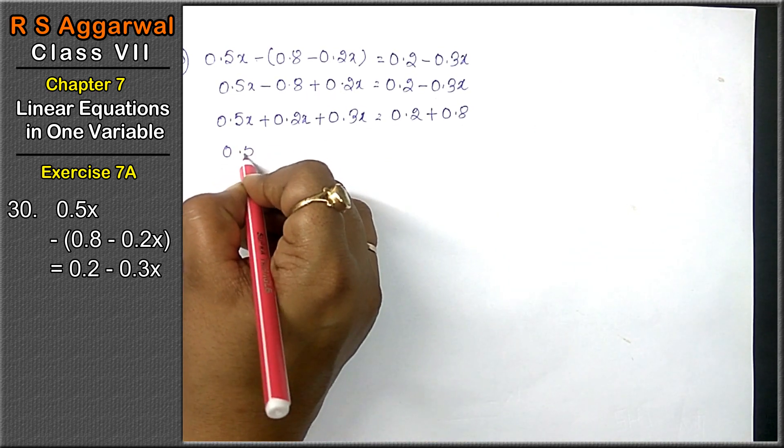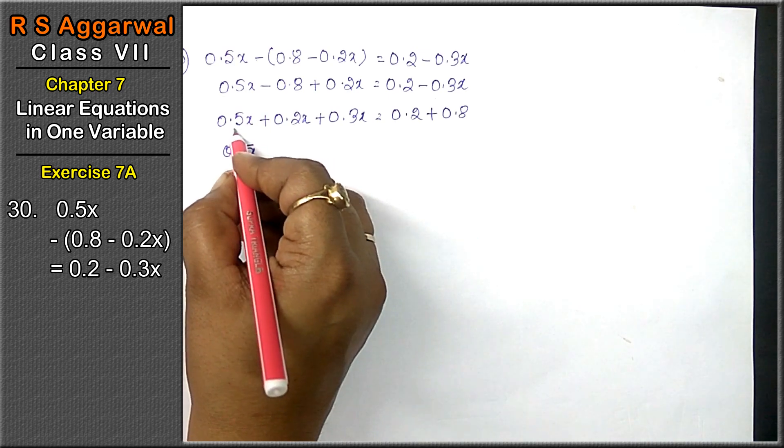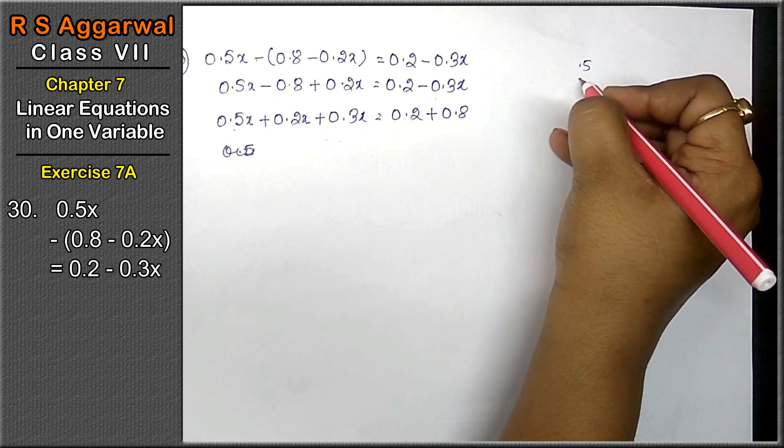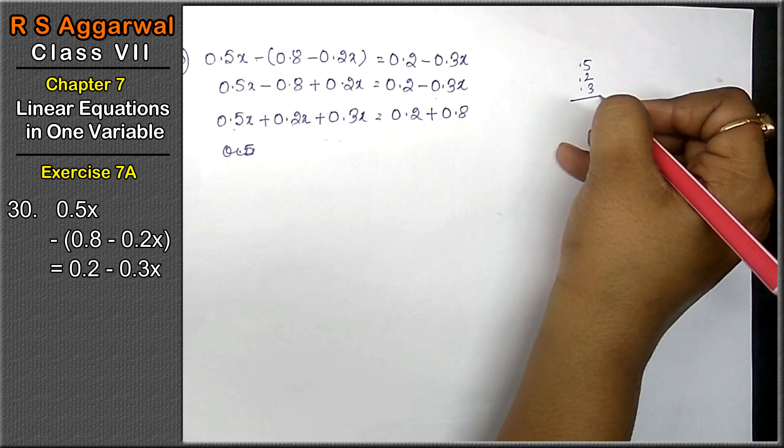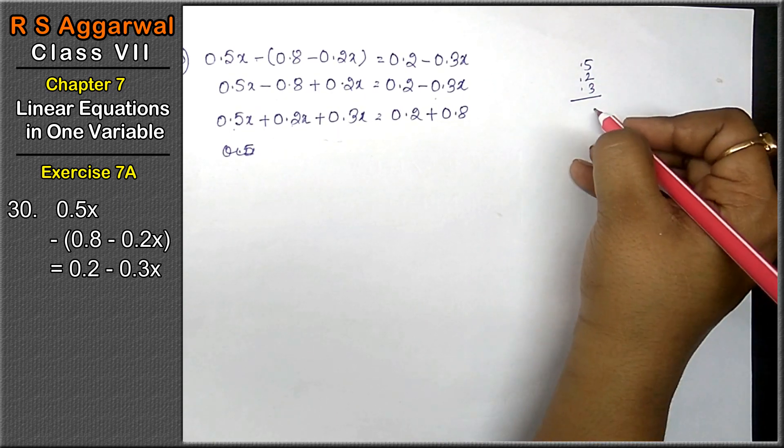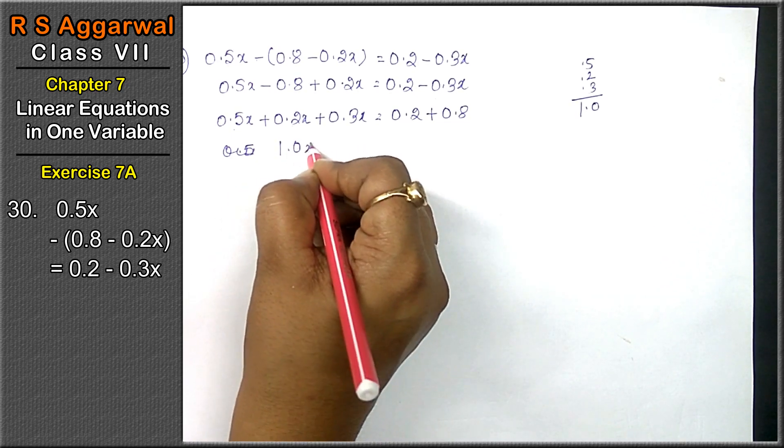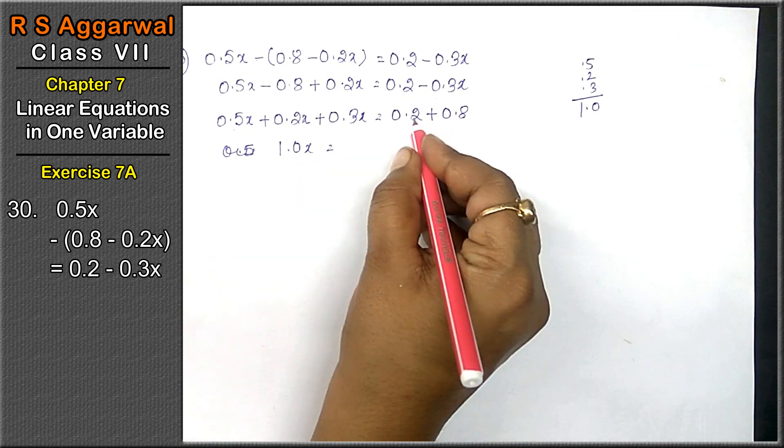0.5 plus 0.2 minus 0.3 is 5 plus 5 is 10, that is 1.0x. 1.0x equals to 8 plus 2 is 1.